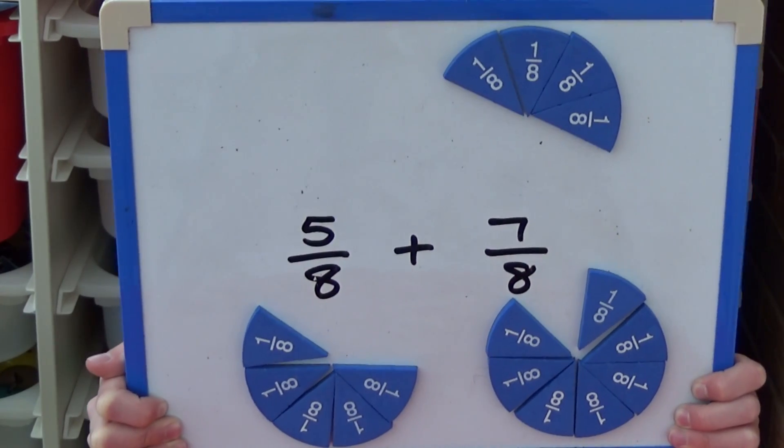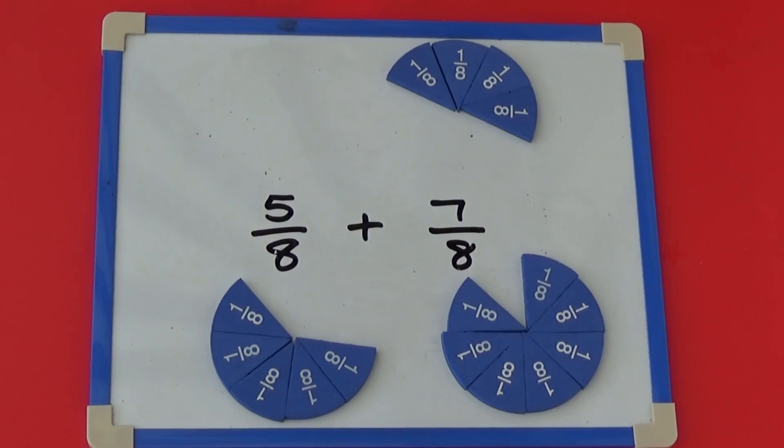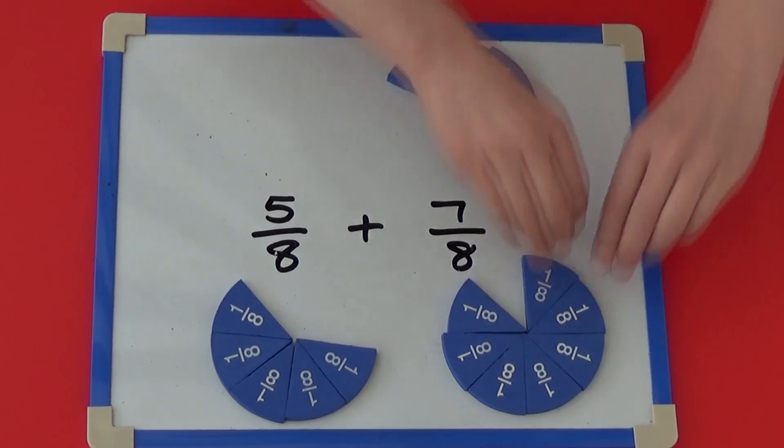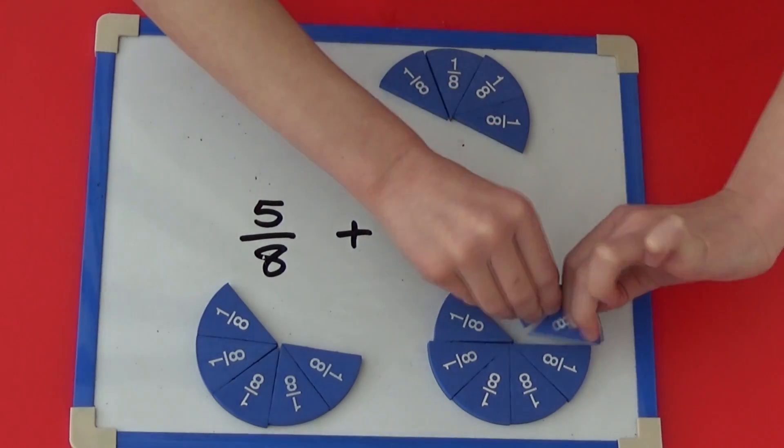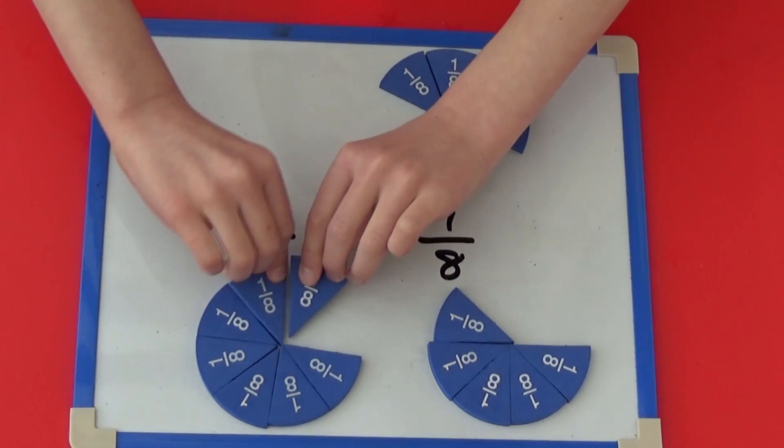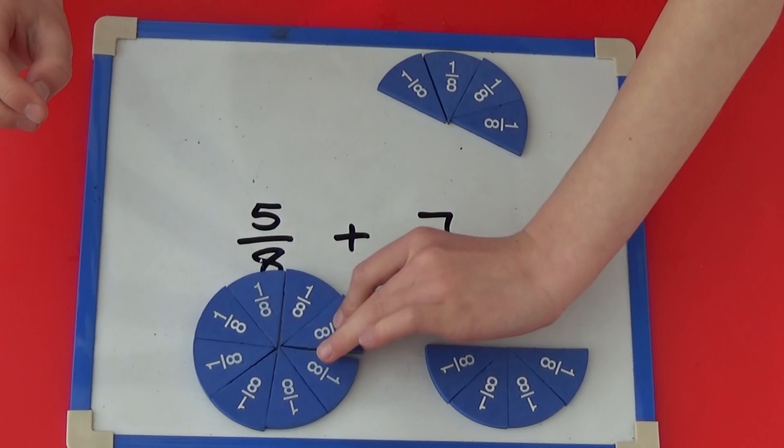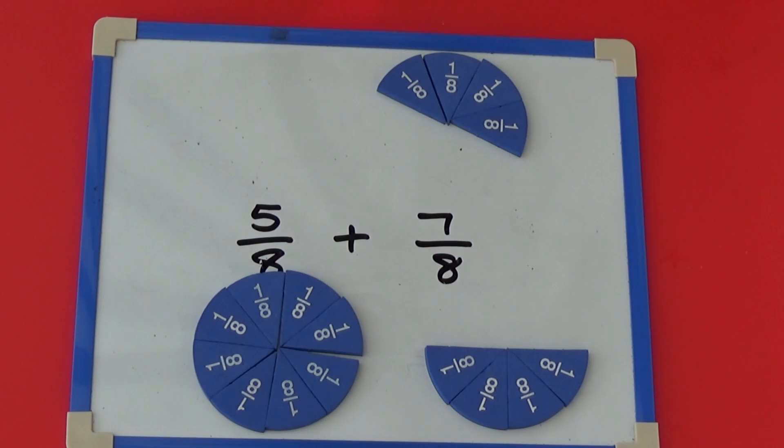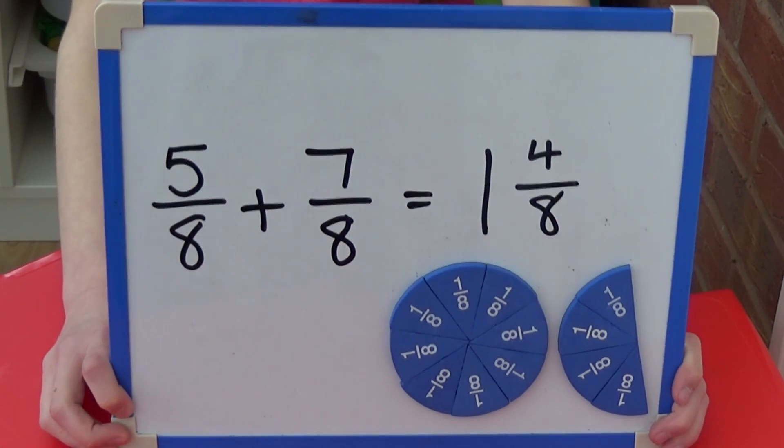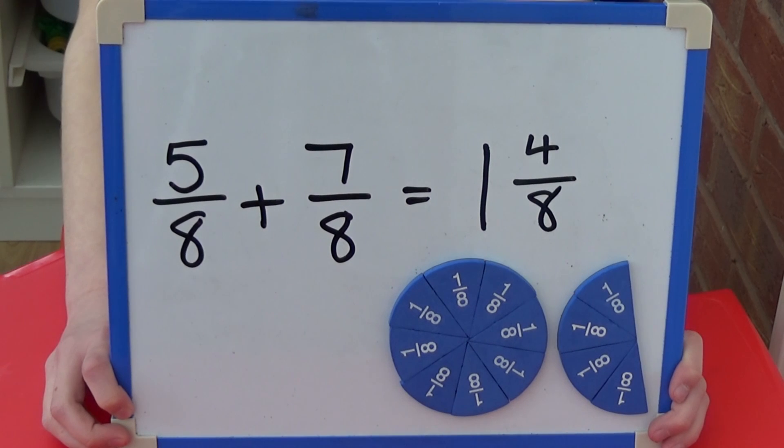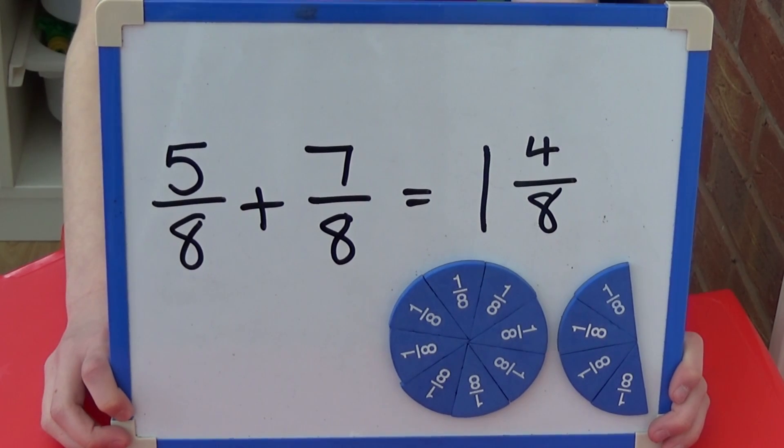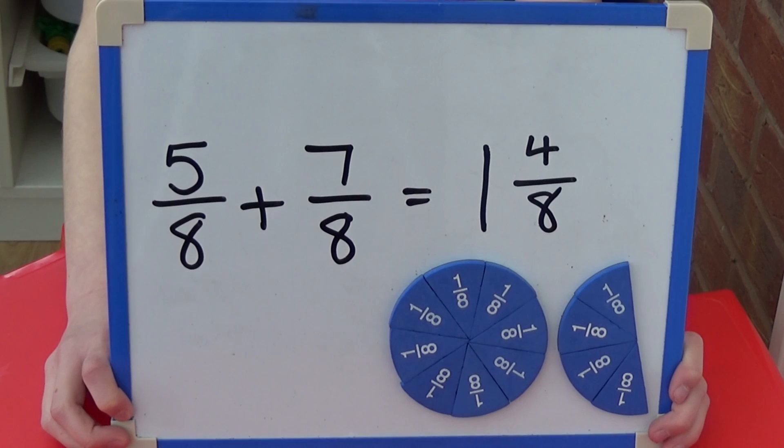Let's see what's going to happen. I'm going to put them all together to make one whole. We can see that we can make one whole and four eighths, which is also a half. So five eighths and seven eighths equals one and four eighths or one and a half.